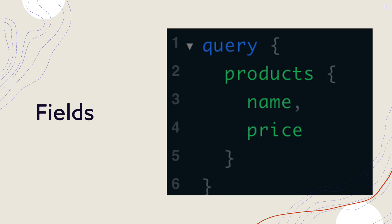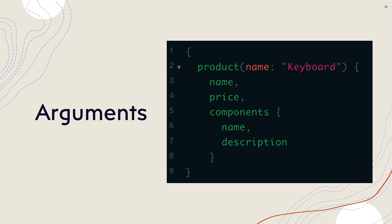There are situations where you might need to query a specific product — like a product with name keyboard or mouse, or product with id equal to 1 or 2. You will end up using what is called arguments, which looks something like this: a product field with a name colon followed by the argument you're passing, like keyboard. If it is id then you specify id colon. The rest of the query looks pretty much the same as before.